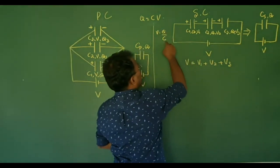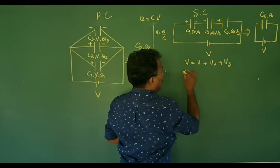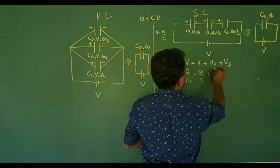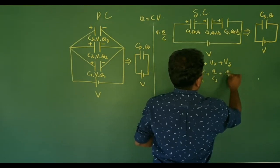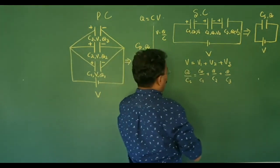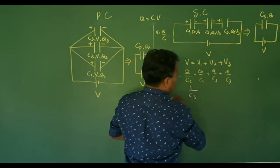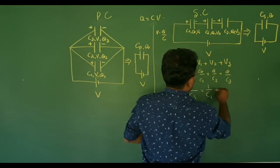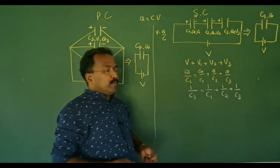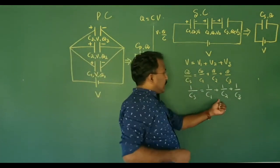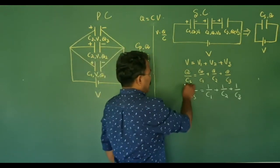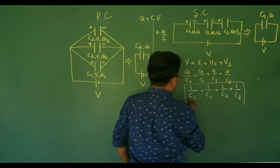So the series formula gives us: Q divided by CS equals Q divided by C1 plus Q divided by C2 plus Q divided by C3. All Q's cancel out, giving us: 1 by CS equals 1 by C1 plus 1 by C2 plus 1 by C3.